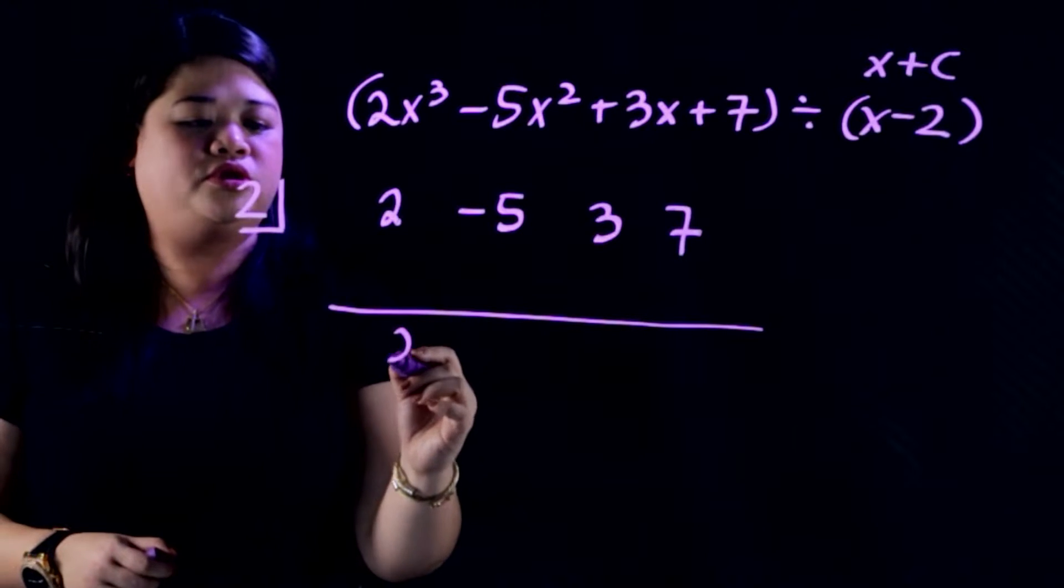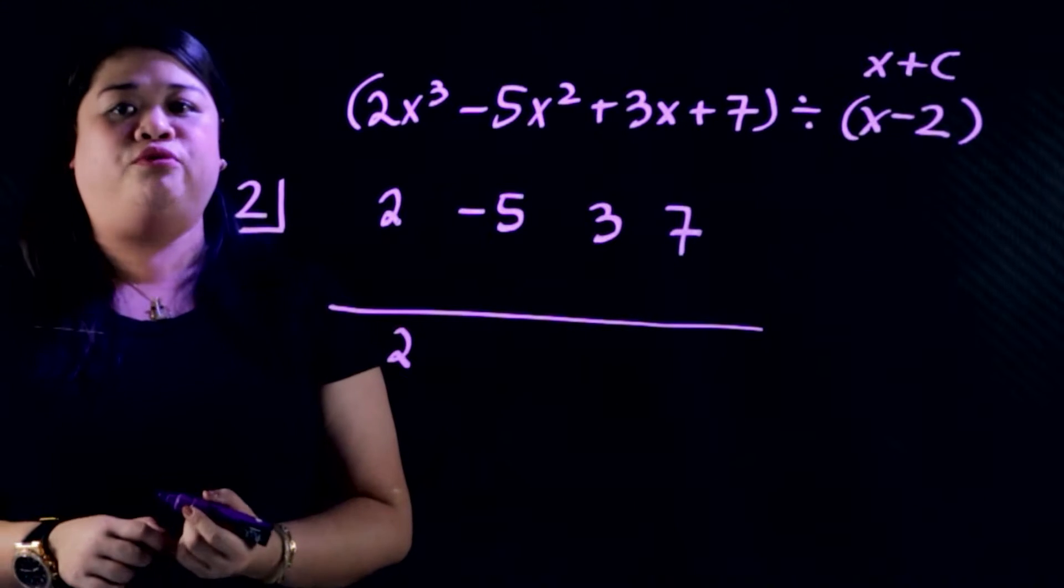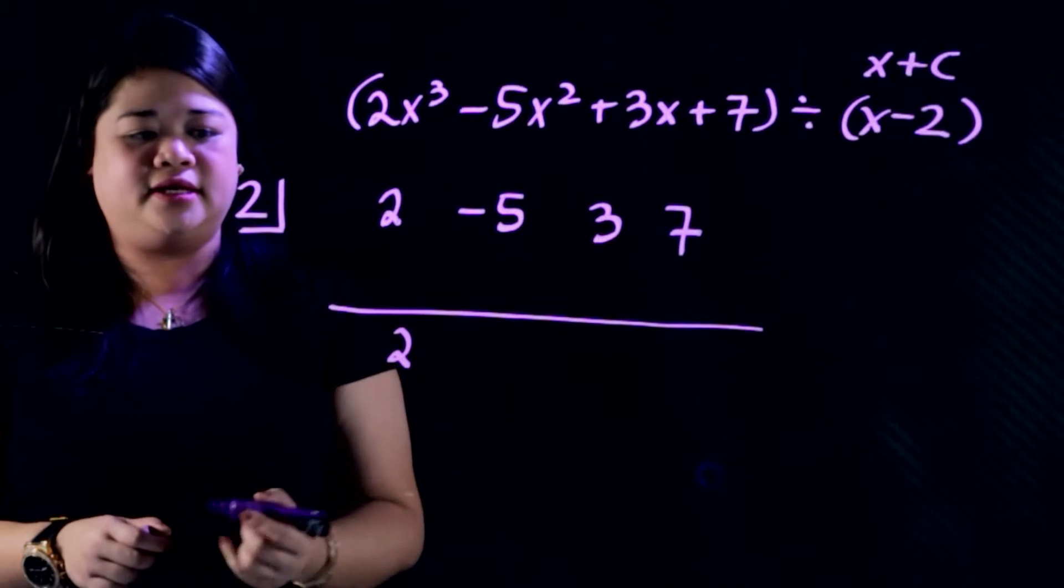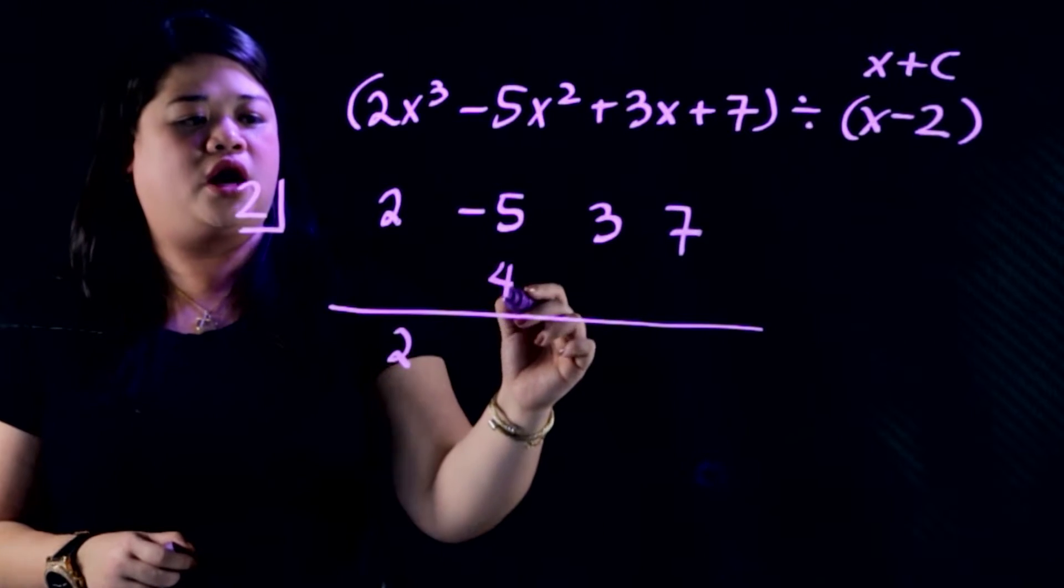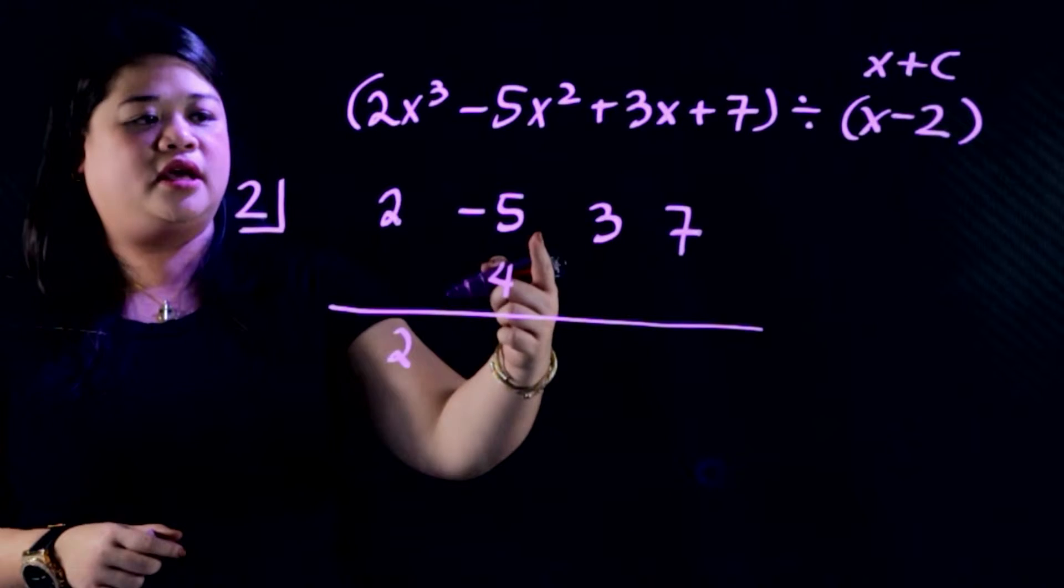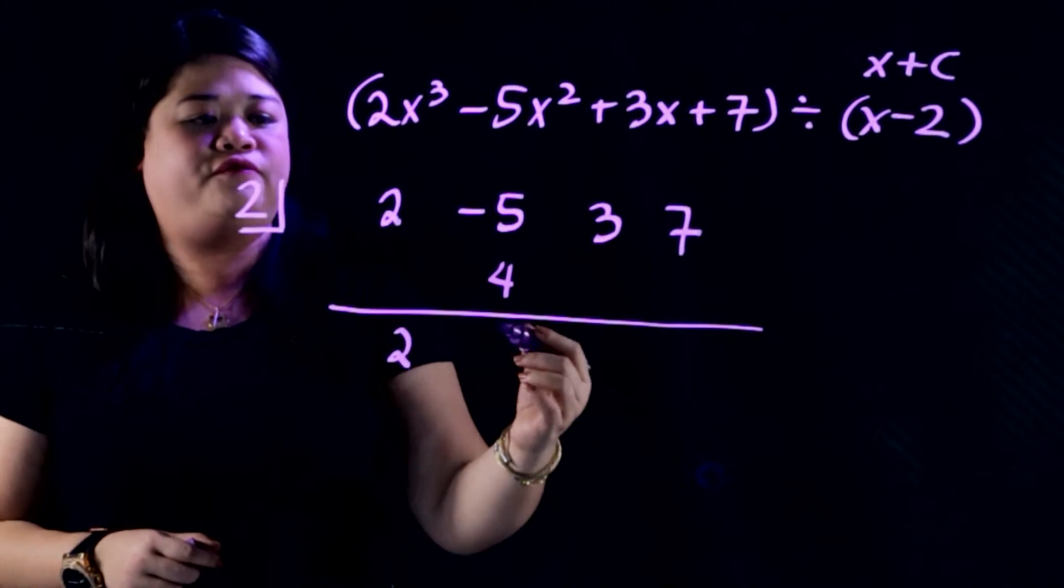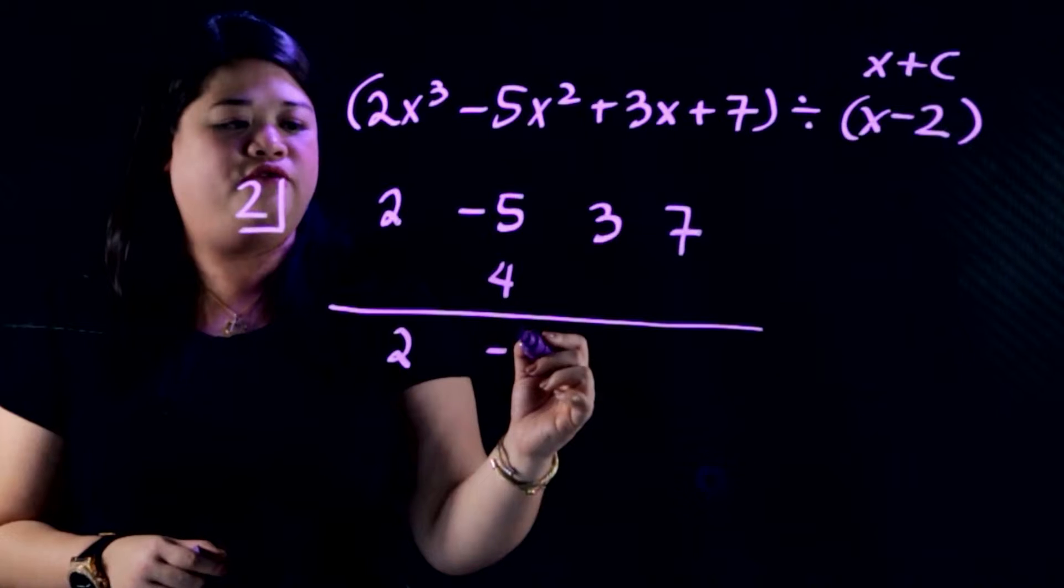you bring down 2. So you have 2 there. And then we multiply and add. So multiply, 2 times 2, you get 4. And then add, negative 4 plus 5, you'll have negative 1.